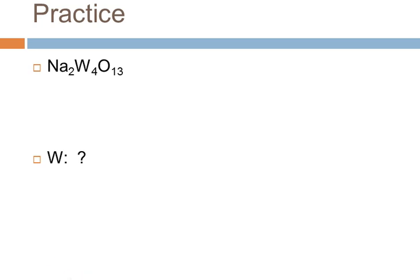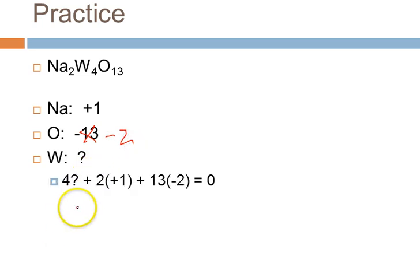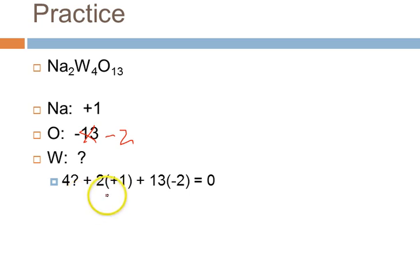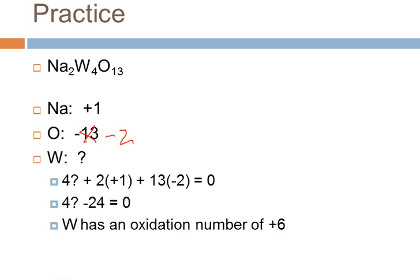Here's a more complex one. Sodium has an oxidation number of plus one as a group one metal cation. Each oxygen has an oxidation number of minus two, and there are thirteen of them. There are four tungstens, and we don't have a rule for tungsten. But the sum of the oxidation numbers must be zero. So four times the oxidation number of tungsten, plus two times plus one for sodium, plus thirteen times minus two for oxygen, all add up to zero. Solving the algebra gives an oxidation number of plus six for tungsten.